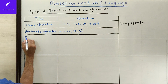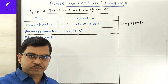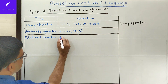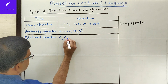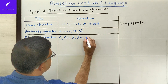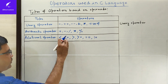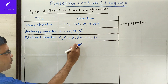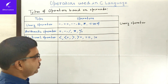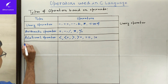Next is the relational operator. Relational operators find the relation between two operands. Examples include: less than (<), less than or equal to (<=), greater than (>), greater than or equal to (>=), equal to (==), and not equal to (!=). So there are six types of relational operators used in C.